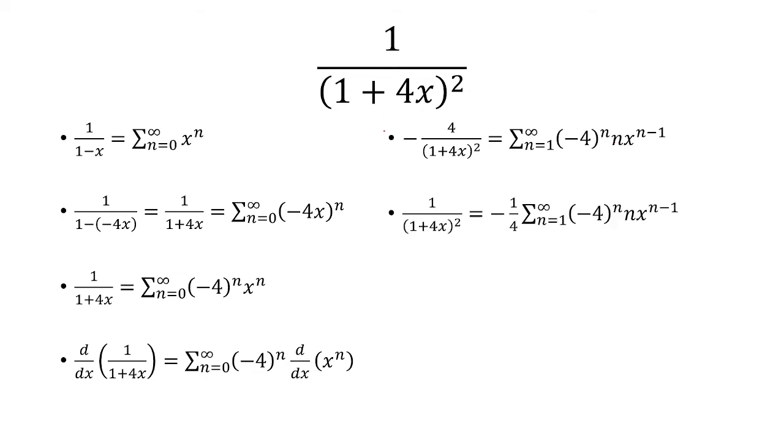Now I want to divide both sides by negative 4, which is the same thing as multiplying by negative 1 fourth. I purposely left it outside the sum, but you can bring it inside.